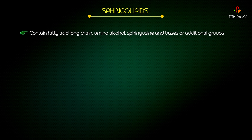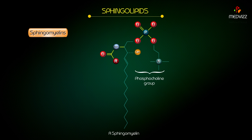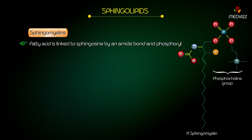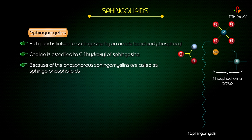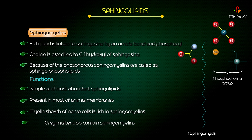Sphingolipids contain fatty acid, long-chain amino alcohol sphingosine, and bases or additional groups. They are subdivided into sphingomyelins and glycolipids. Sphingomyelins — structure: fatty acid is linked to sphingosine by an amide bond, and phosphorylcholine is esterified to the C1 hydroxyl group of sphingosine. Because of the phosphorus, sphingomyelins are called sphingophospholipids. Functions: they are the most abundant sphingolipids, present in most animal membranes. Myelin sheath of nerve cells is rich in sphingomyelins. Gray matter also contains sphingomyelins.